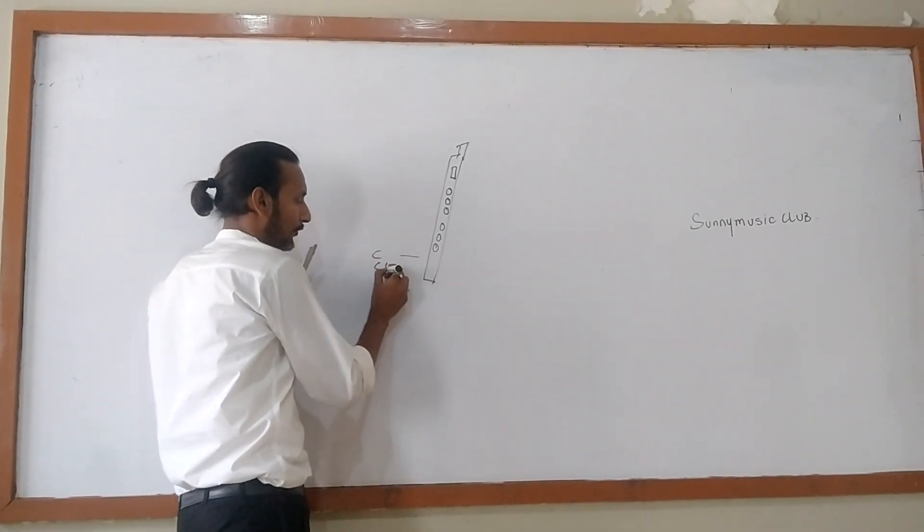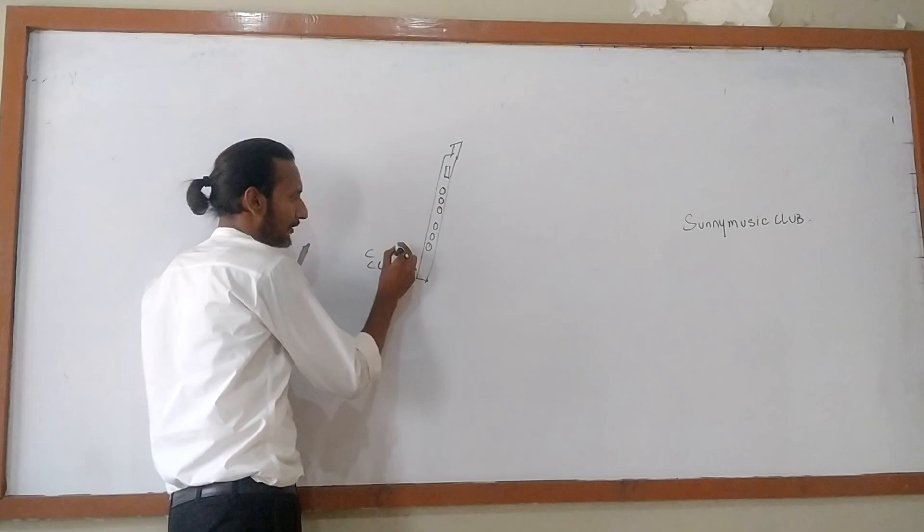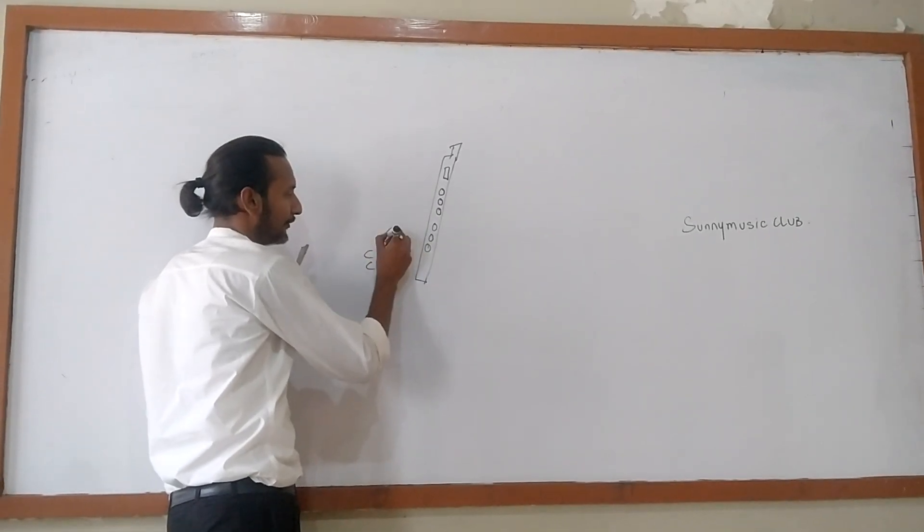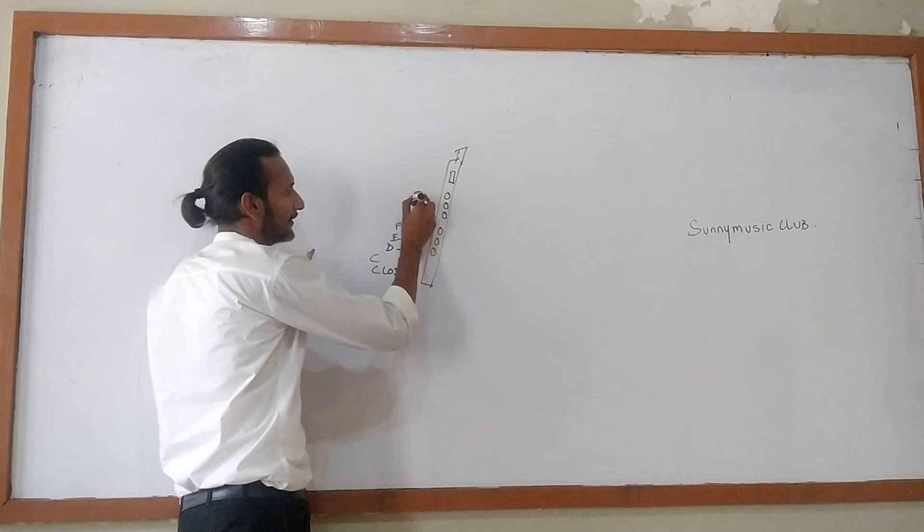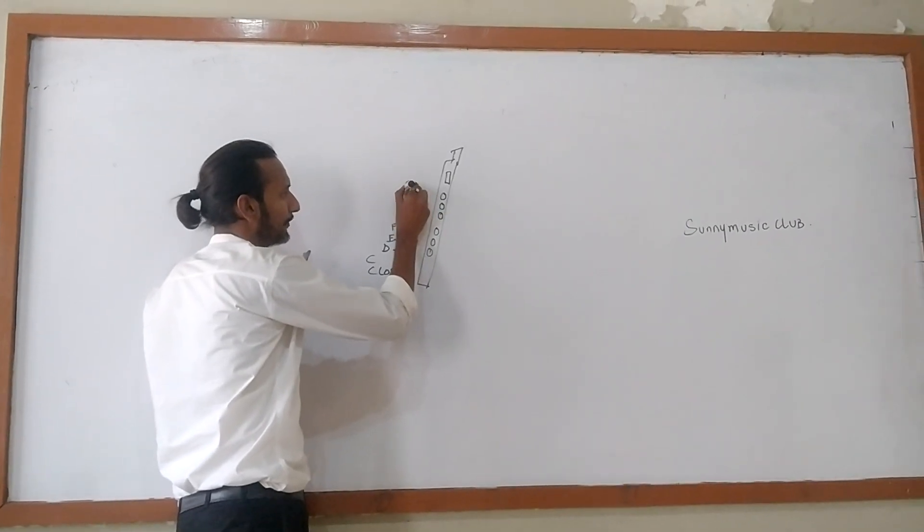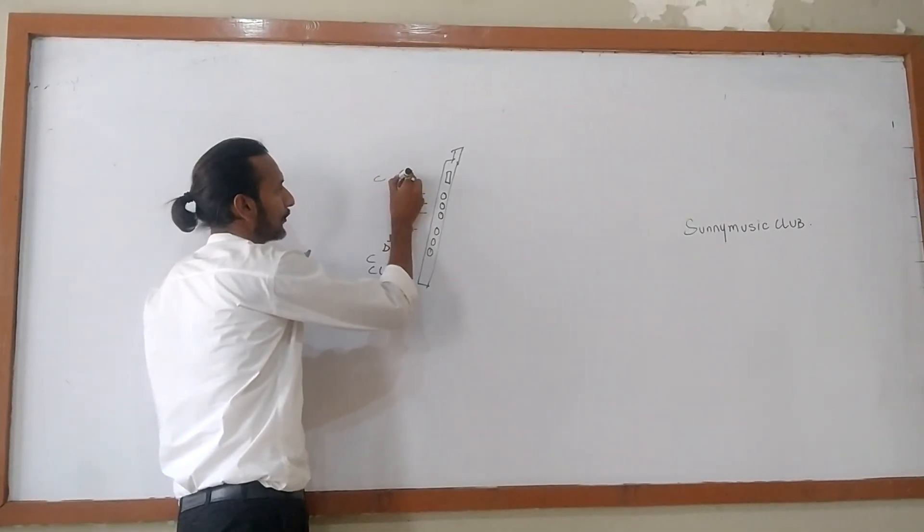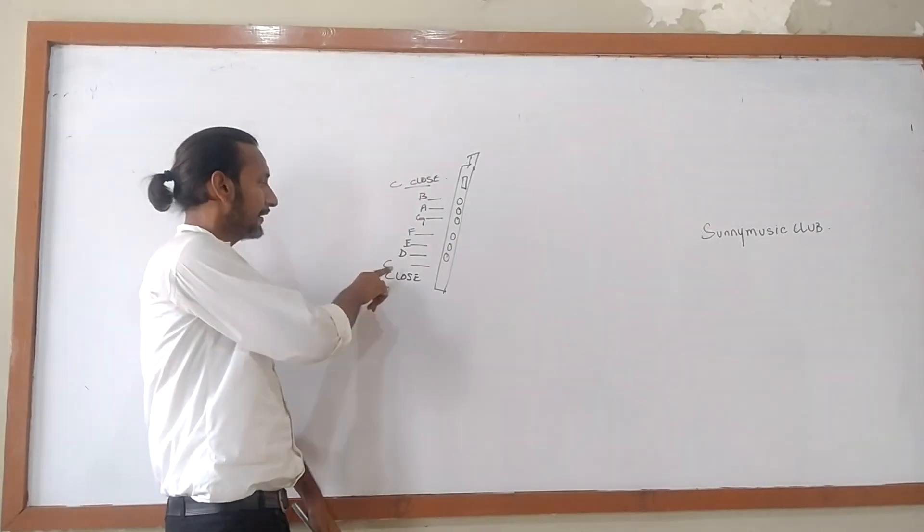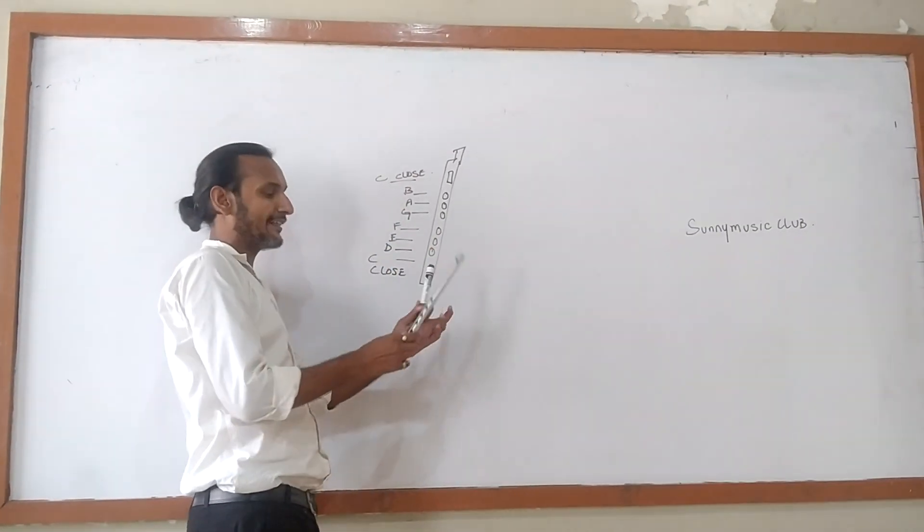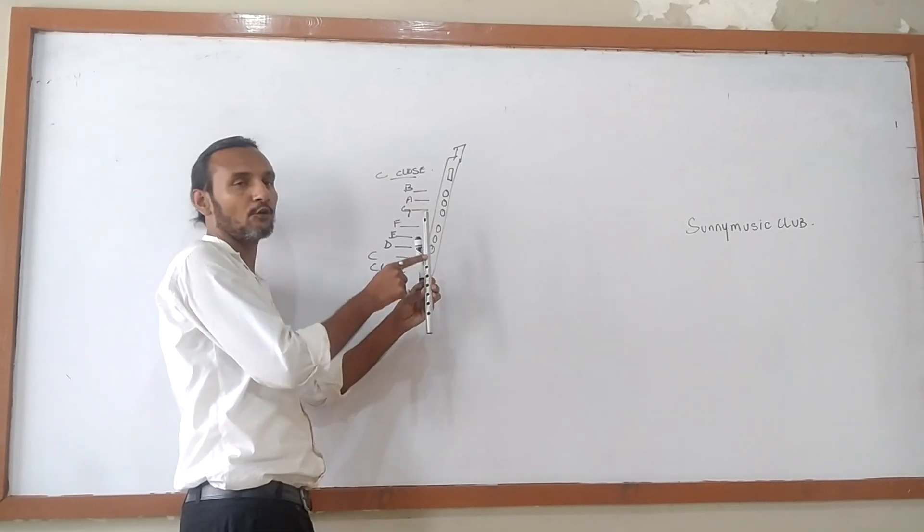Now, this is your C close. This is your D. This is your E. This is your F. This is your G. This is your A. This is your B. And here is your C close. Got it now.